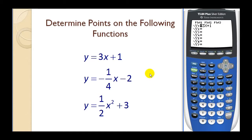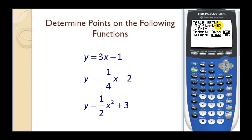Before we take a look at the table, let's go ahead and look at the table set. If we press second window, this first row, table start, is the x value we'd like to occur first in the table. Let's start at zero and press enter. The change in the table will be by ones. Next we have two options for the independent variable: either auto or ask. Let's select auto first — press the down button while it's blinking on auto and press enter.